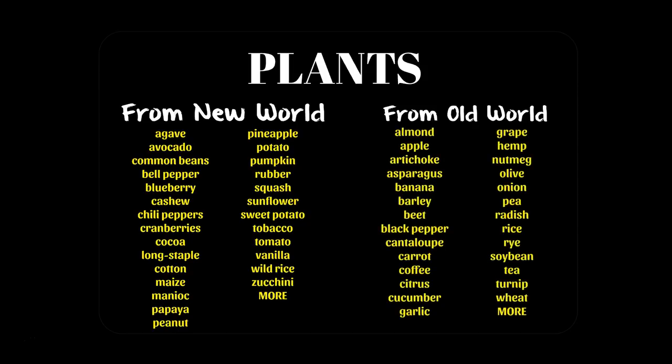Coming the other way, from Europe into the Americas, there's a whole host of foods and plants that didn't exist in the Americas. Native Americans had no previous experience with almonds, apples, artichokes, asparagus, bananas, black peppers, carrots, coffee, citrus, grapes, hemp, rice, or wheat. All of these items brought over will significantly transform the landscape of the Americas after colonization.